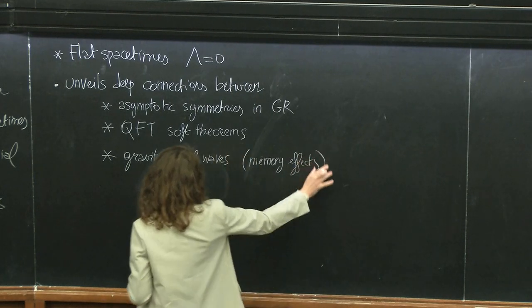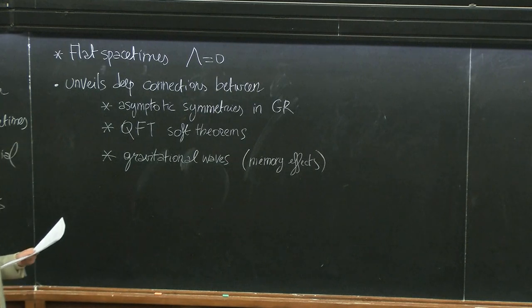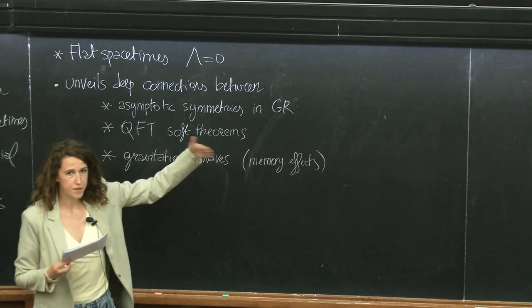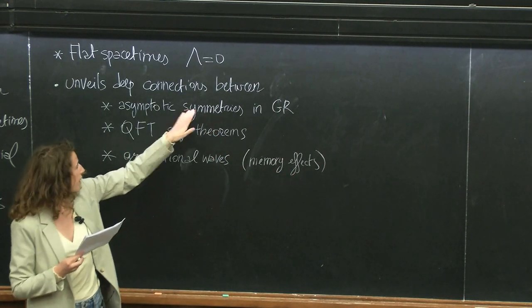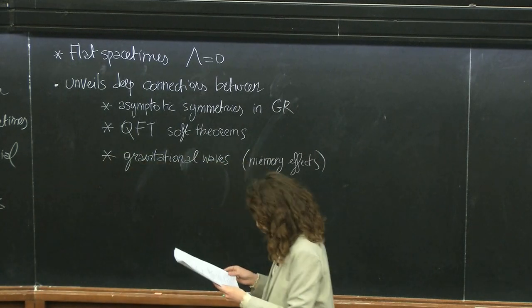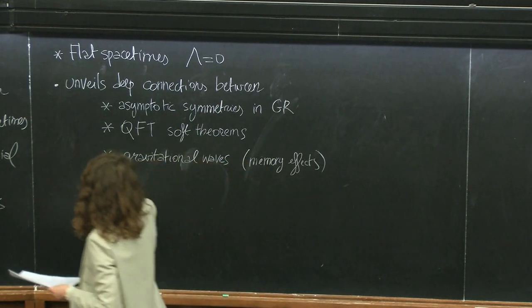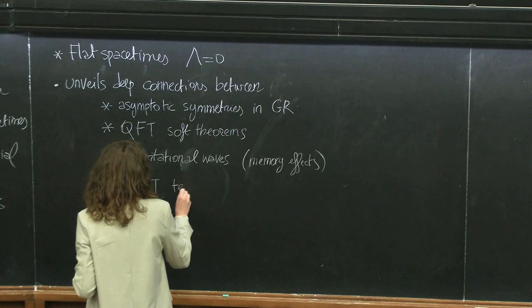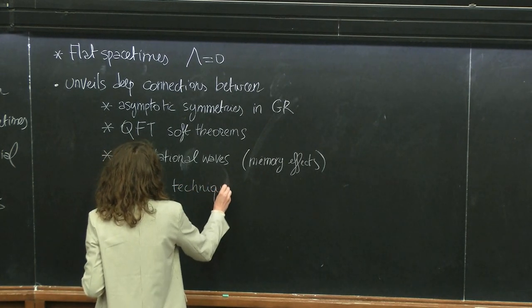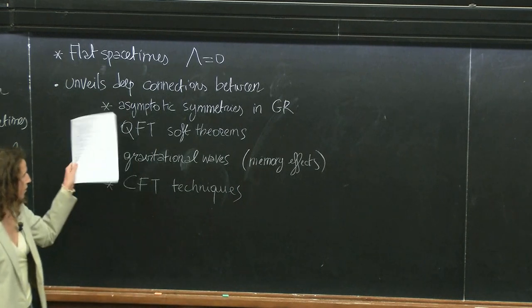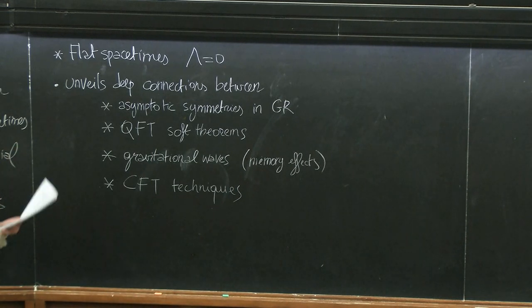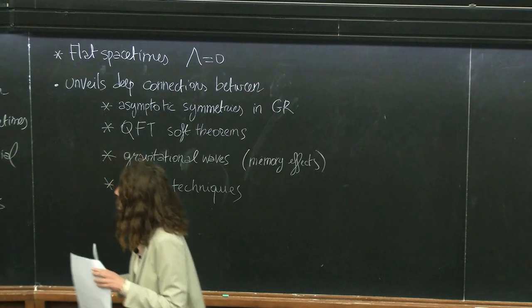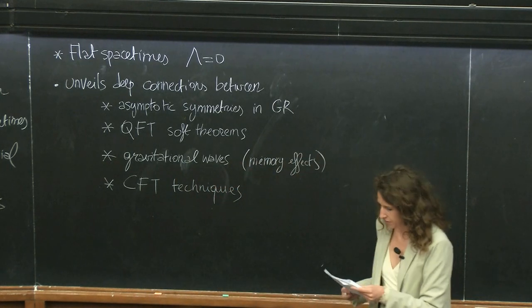I will not have time to talk much about memory effects, but roughly speaking these effects are the physical consequences of the fact that we have an infinite amount of symmetries at the boundary of flat spacetimes. And then, as we will see, since we want to relate this to holographic techniques, celestial amplitudes will require building some connection with 2D conformal field theories.